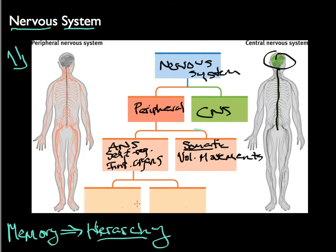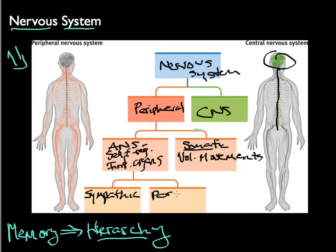Skeletal muscles fall under somatic as well. The further differentiation of the ANS — the autonomic nervous system — breaks down into two other component systems. One is sympathetic, and the second one is parasympathetic.